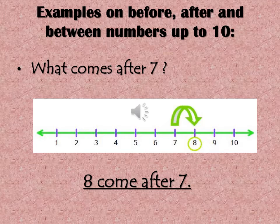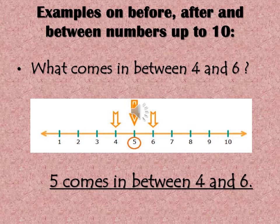Four, five, six, seven, eight. So what comes after seven? Eight! Eight comes after seven. In this next question we are asking: what comes in between four and six? Four, five — let's count: one, two, three, four, five.